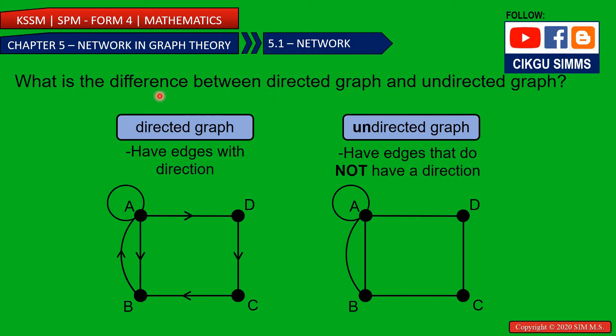So first, what is the difference between directed graph and undirected graph? Directed and undirected. Undirected means you don't have a direction. It means this is a graph you learned in the lessons before. Today you will learn about directed graph, which have direction. Directed has direction. Undirected means no direction.